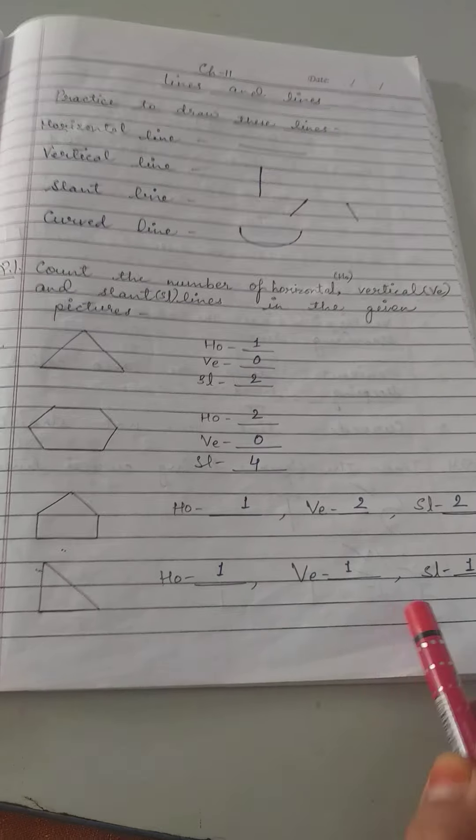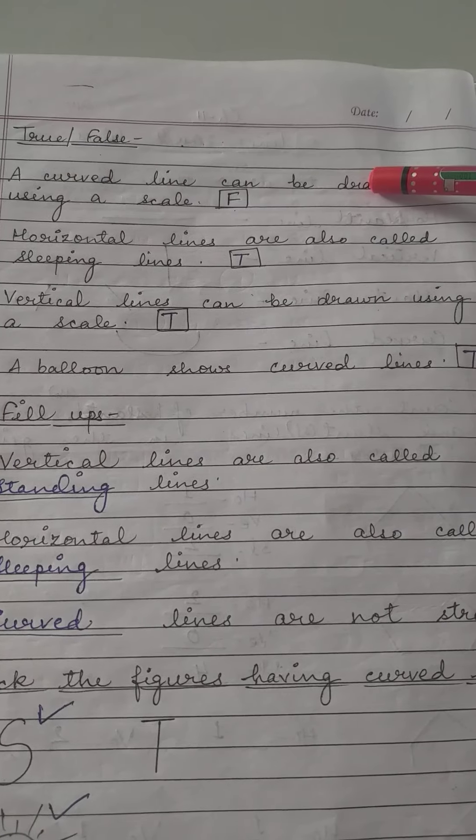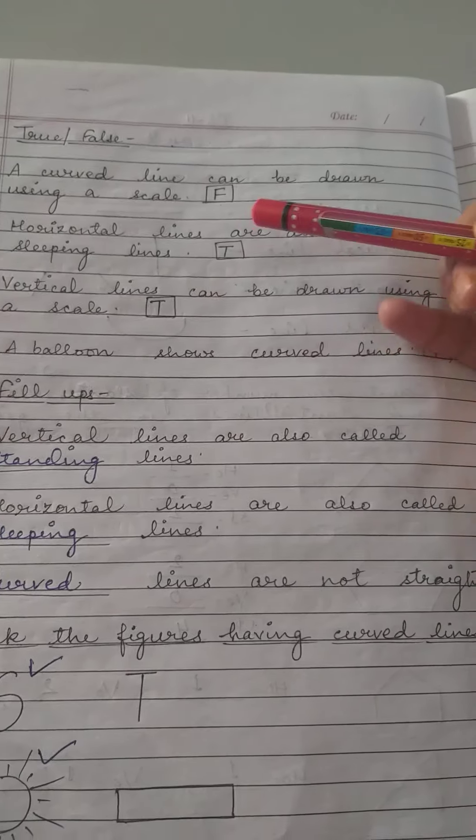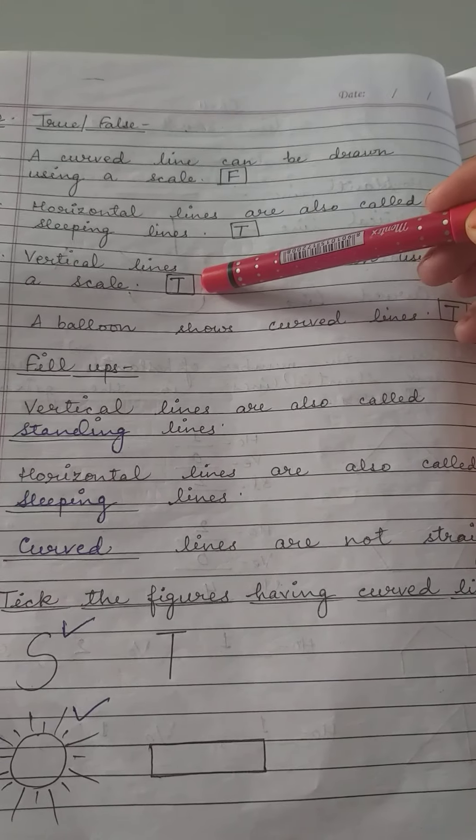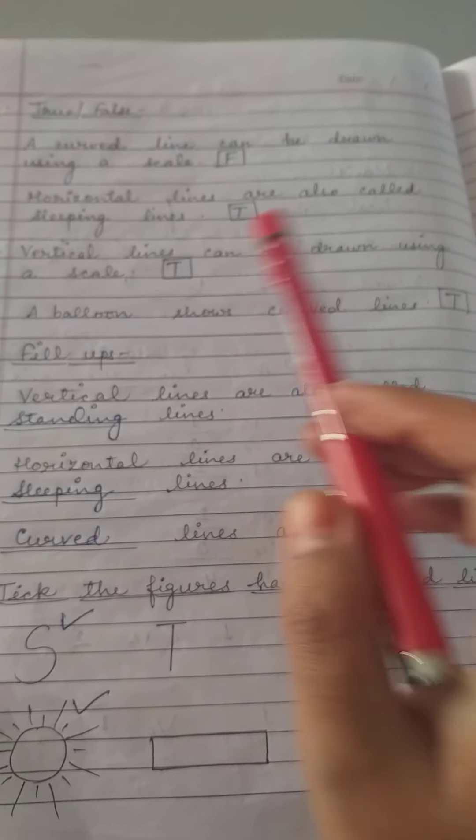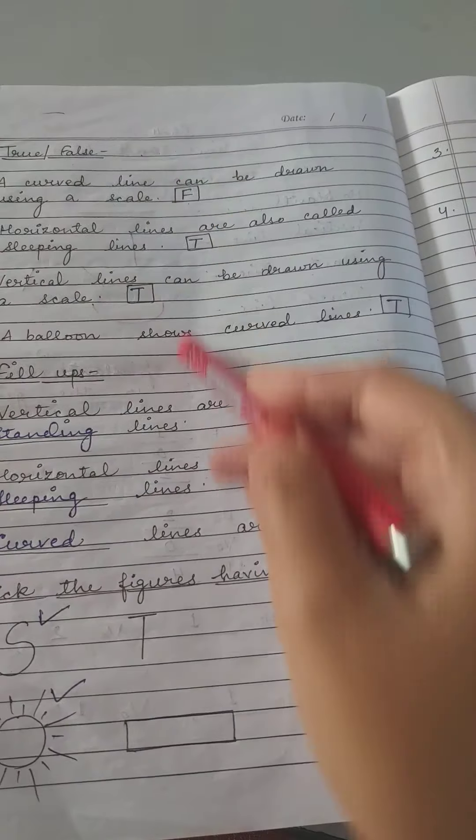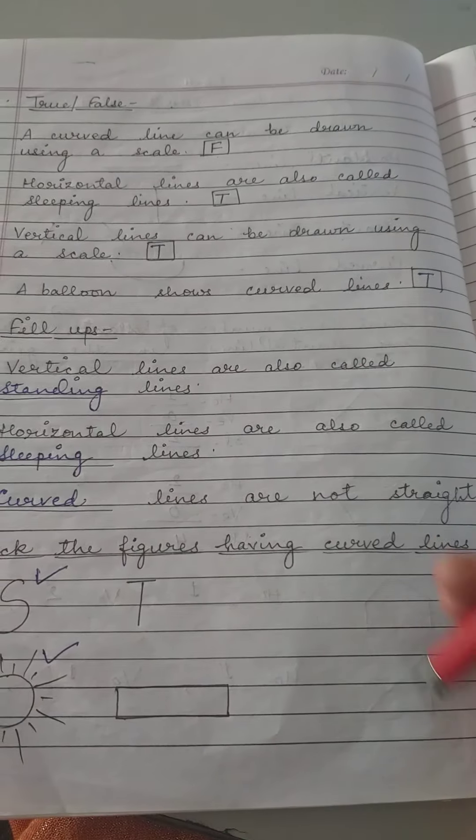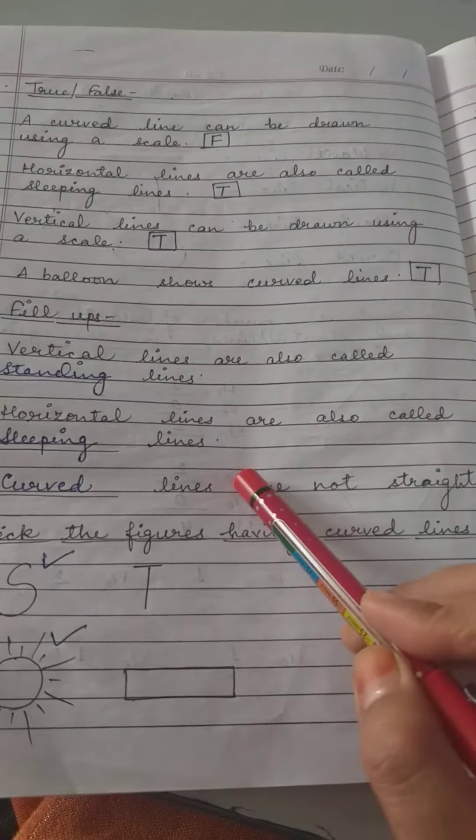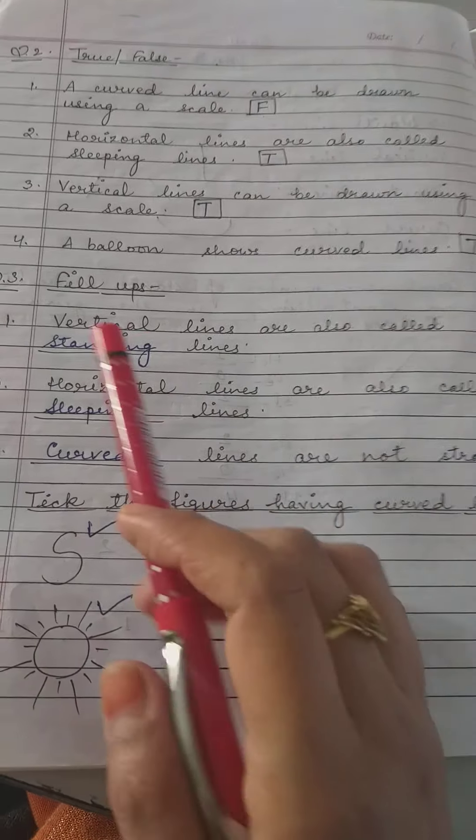Okay, now true or false: a curved line can be drawn using a scale. So that is false. Horizontal lines are also called sleeping lines - true. Vertical lines can be drawn using a scale - yes. A balloon shows curved lines - that is curved line, yes, so it is true.